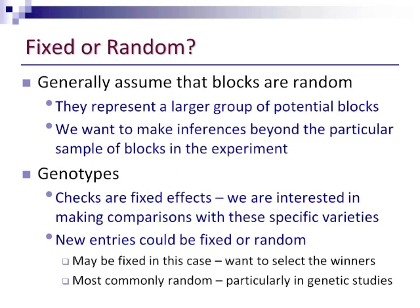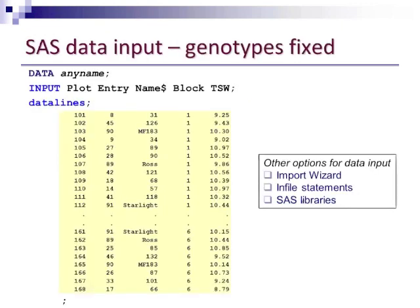One important decision that has to be made before you begin the analysis is to decide whether your genotypes are going to be fixed or random. It's generally assumed that our blocks are random because they represent a larger group of potential blocks, and we want to make inferences beyond the particular sample of blocks in the experiment. We know that the checks are fixed effects — we're wanting to make specific comparisons with those varieties. However, the new entries could be fixed or random. Most commonly they're considered random because they've never been evaluated before. However, in this case you could argue they would be fixed, since you want to make specific comparisons and select the winners, and also they didn't come from a common population. We'll go ahead and look at both of these possible analyses.